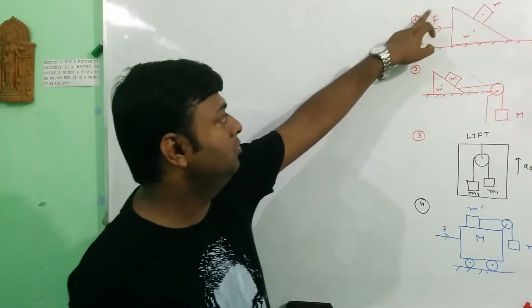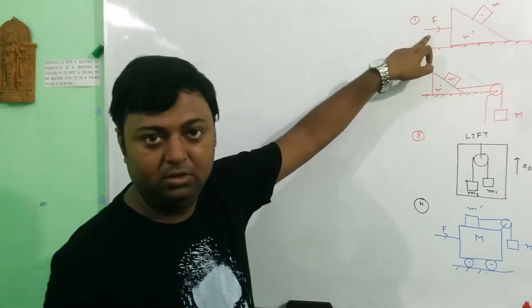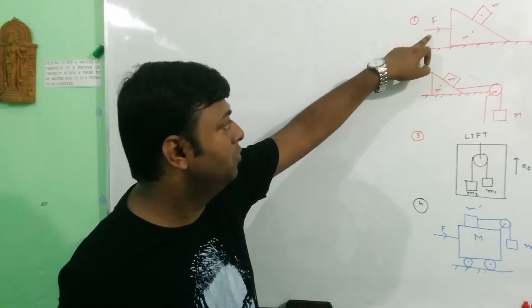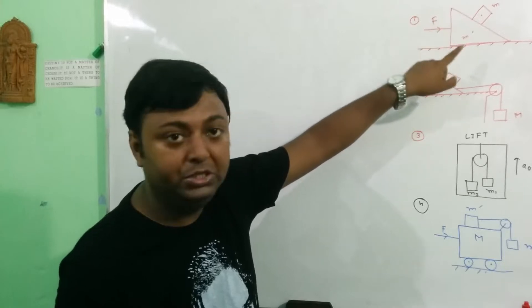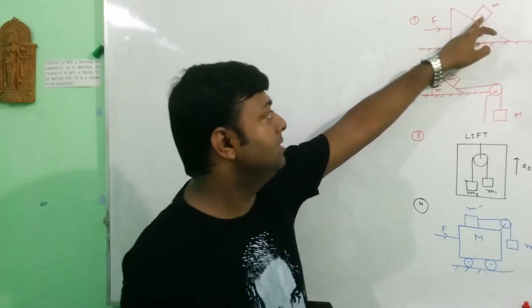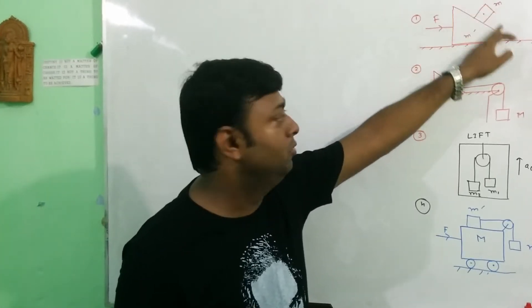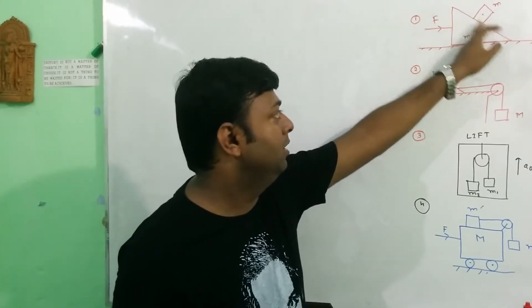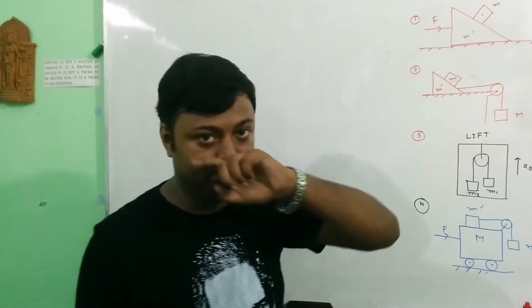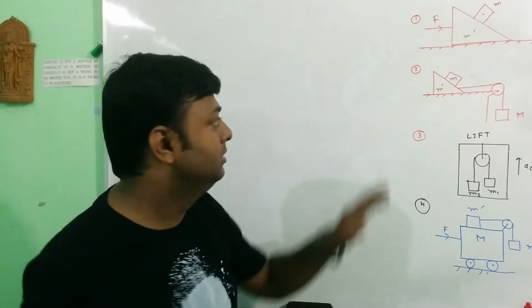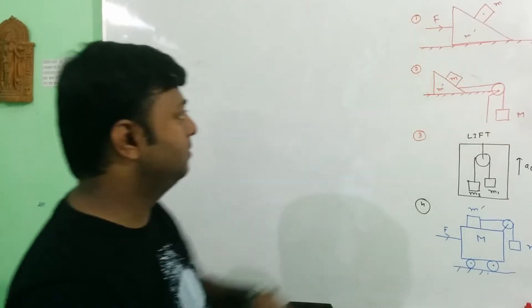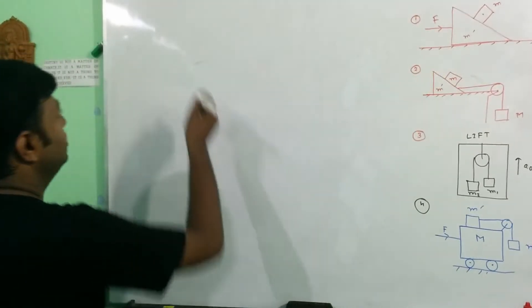The first problem is: find out the force for which the mass is not moving on a wedge. That's the first problem we solve.